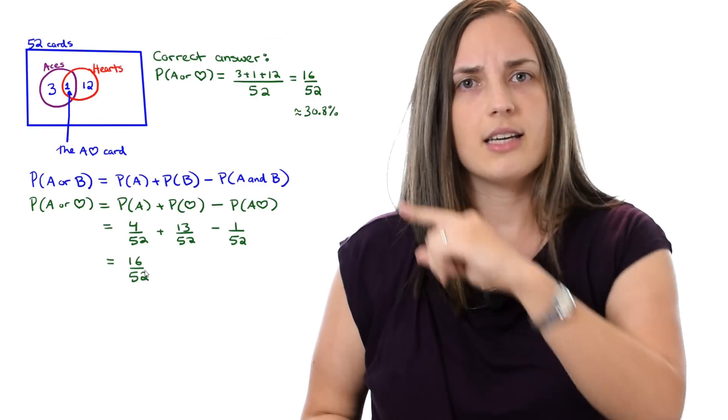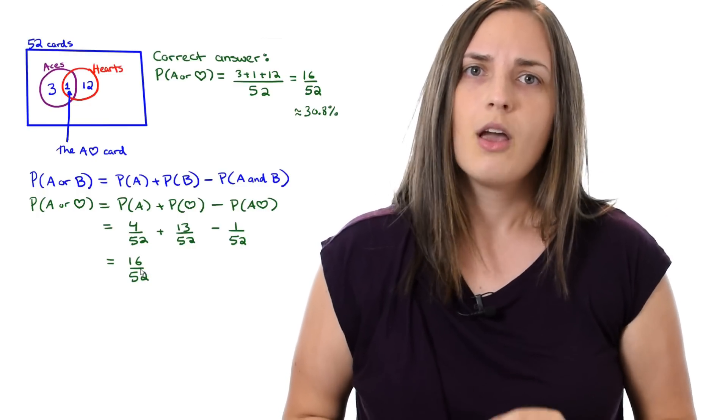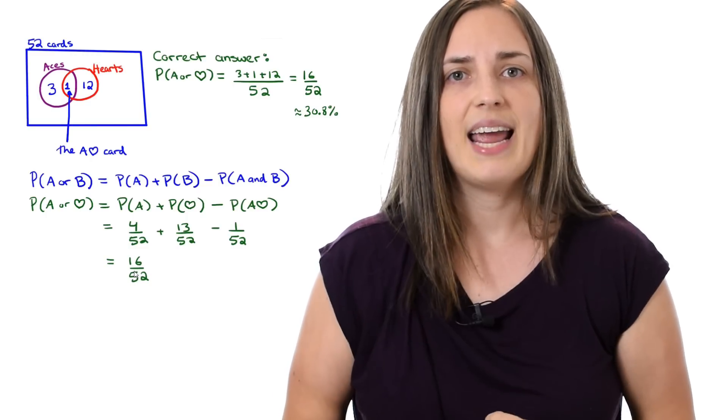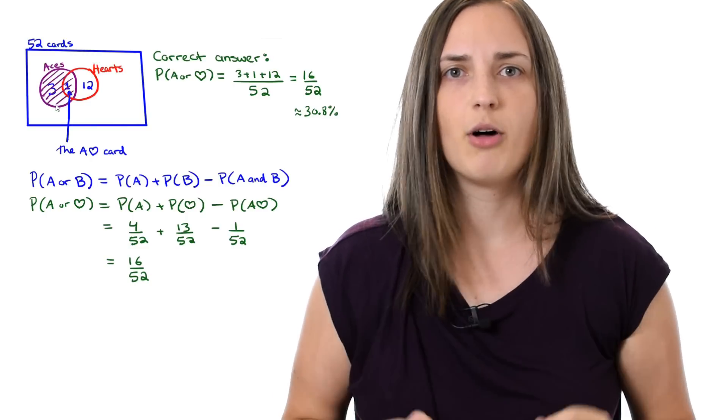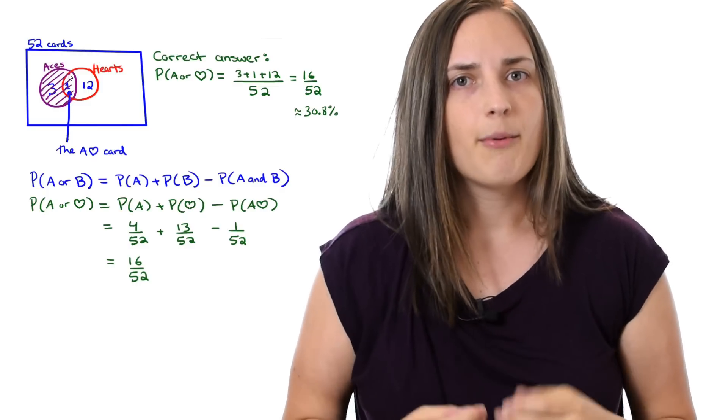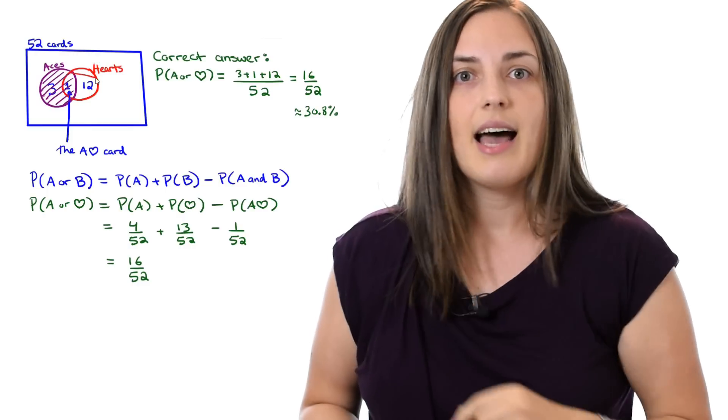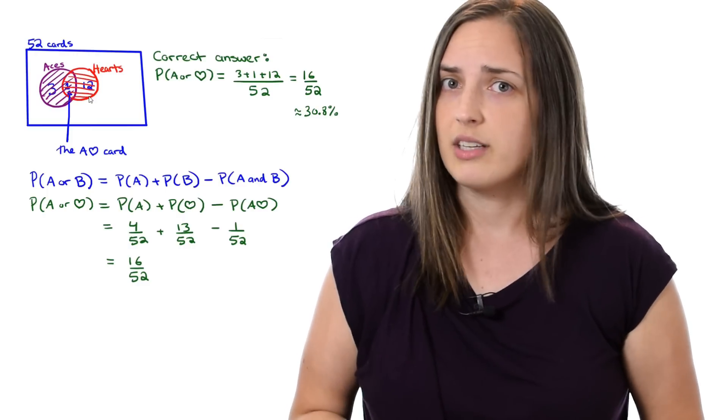Let's see why this makes sense in terms of the Venn diagram. Well, if we think about calculating up all the things that belong to A, let's shade those in and we've counted them all once. Now we add up all the things that belong to B, in this case hearts, and we shade that up. We count all those things once as well.